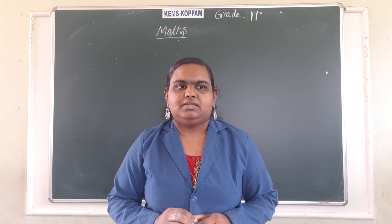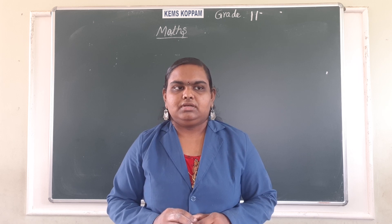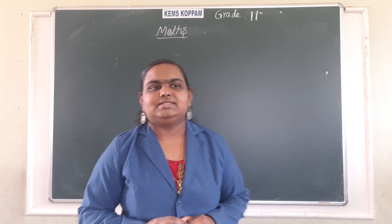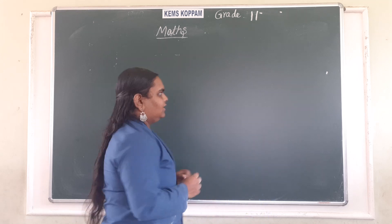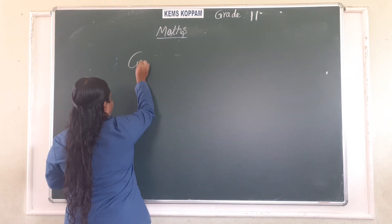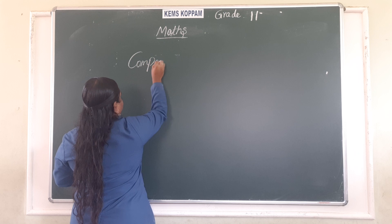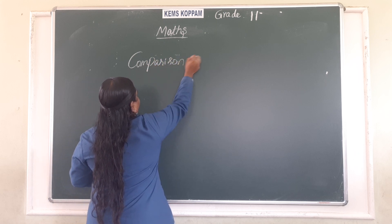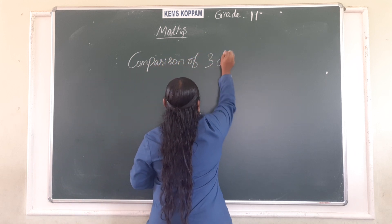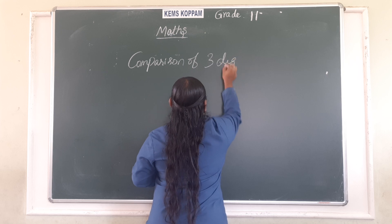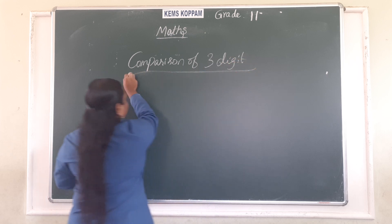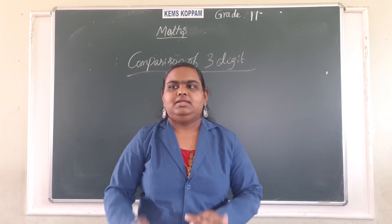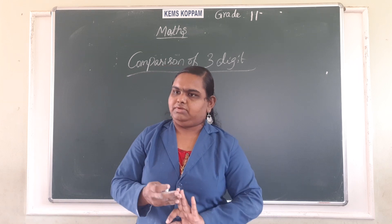Shall we learn the comparison for three digit numbers? Let's see the numbers. Comparison of three digit numbers. See the symbols we are going to learn: less than, greater than and equal to.